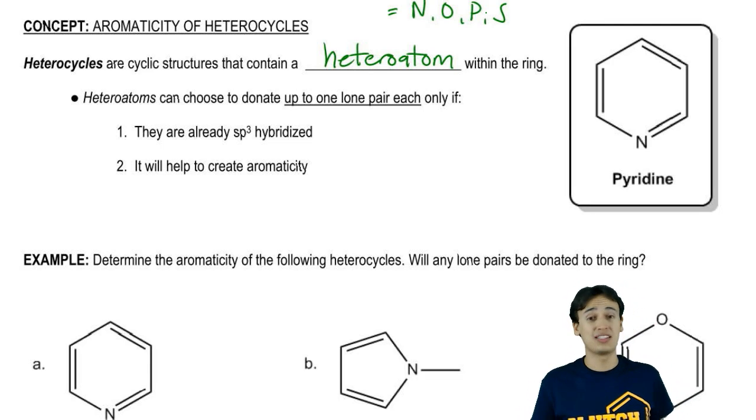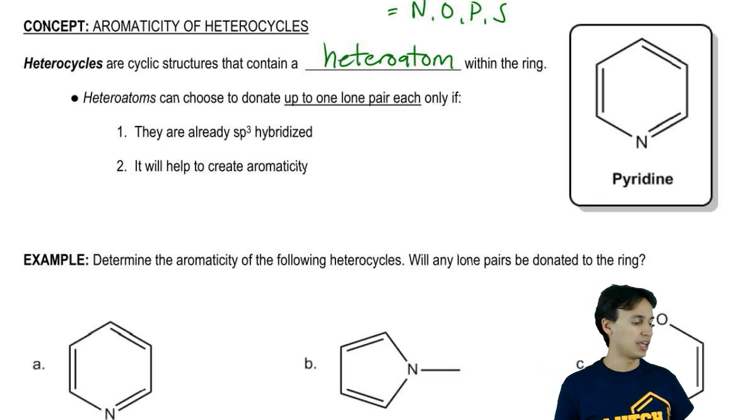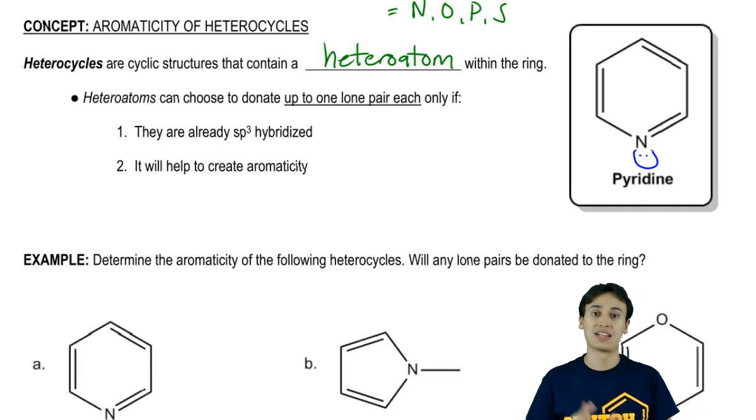One of the best examples of a heterocycle that I could think of is pyridine. Pyridine was a base that we commonly used in Organic Chemistry 1 and if you guys remember, it had this basic lone pair that could be used for reactions, especially for acid-base type reactions. Later on in this section, we're actually going to discuss why that lone pair is basic.